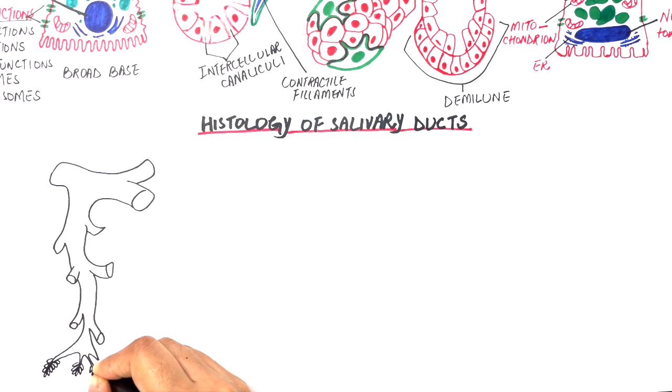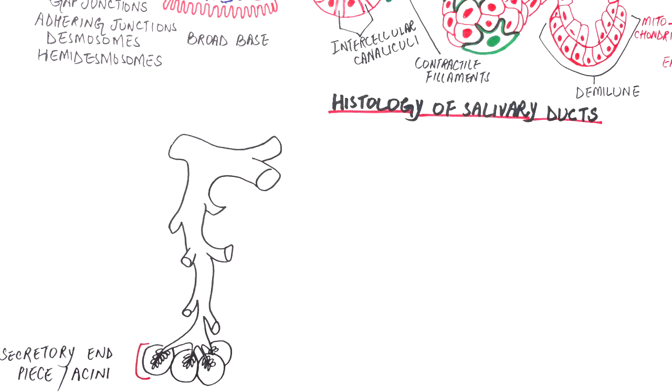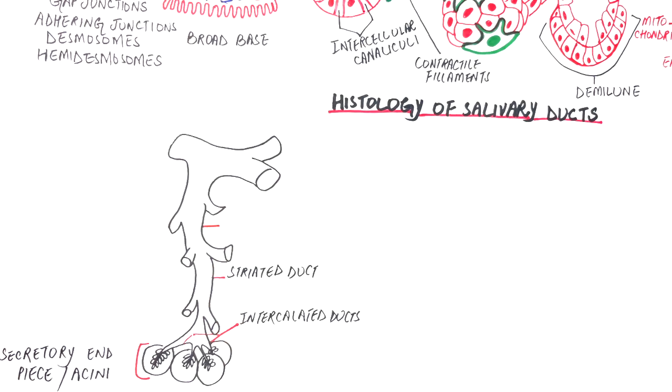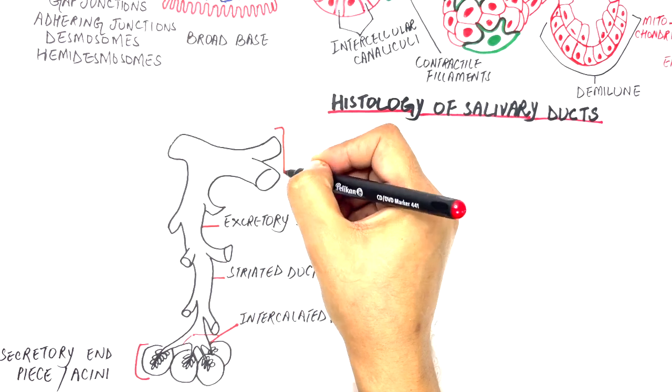The ductal system of the glands is composed of three types of ducts. Starting from the secretory end piece or acini, these are the intercalated ducts that begin from the end part of the acini, the striated ducts that receive saliva from one or multiple intercalated ducts and are comparatively larger in size, and finally we have the excretory duct with the help of which saliva is expelled into our mouth.